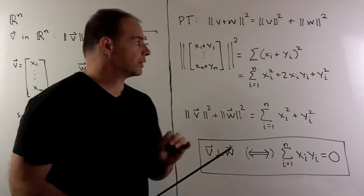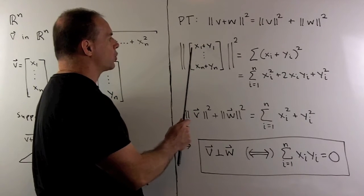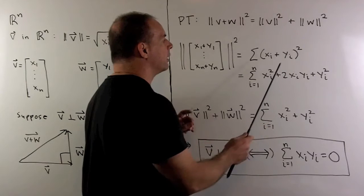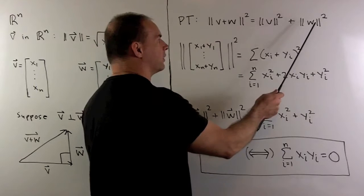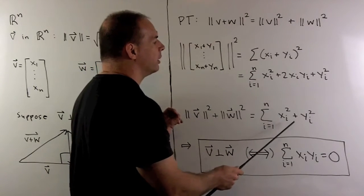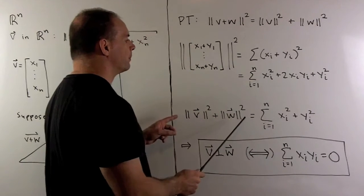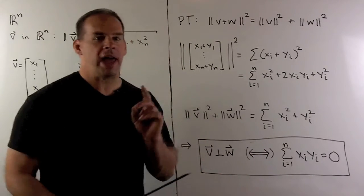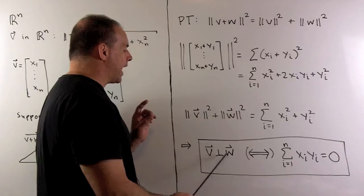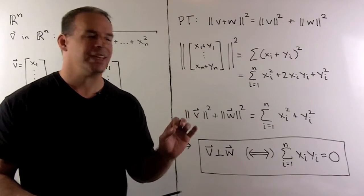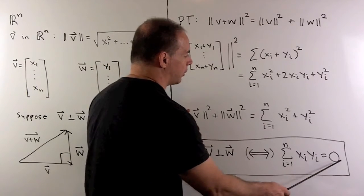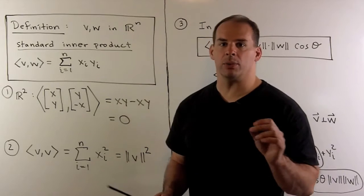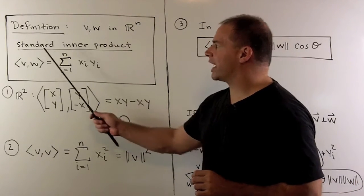Now let's crunch the numbers. If I take the length squared of v plus w, each coordinate is x sub i plus y sub i, so the length squared is the sum of (x sub i plus y sub i) squared, which we can expand. Taking the length of v squared plus the length of w squared gives the sum of x sub i squared plus y sub i squared. Taking the difference, we're left with the middle cross terms. Setting their sum equal to zero and dividing by two: two vectors are at right angles — orthogonal — if and only if the sum of x sub i times y sub i equals zero. This gadget is the standard inner product of v and w.